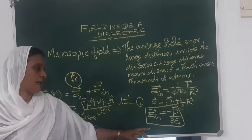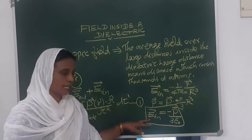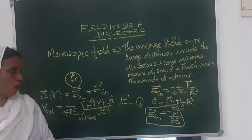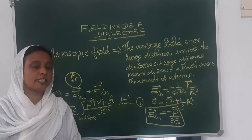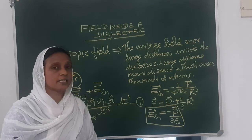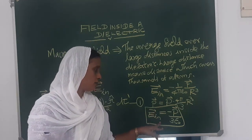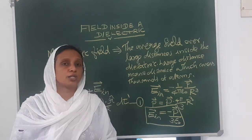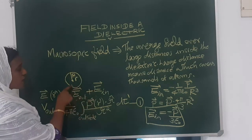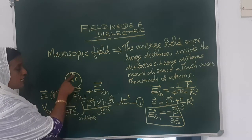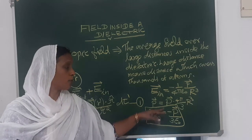This is the electric field due to the inside charges. The peculiarity of this expression is that capital P represents polarization, and this equation gives us the electric field inside a uniformly polarized sphere. So the electric field at point R due to the charges inside the sphere equals the electric field inside a sphere with uniform polarization.